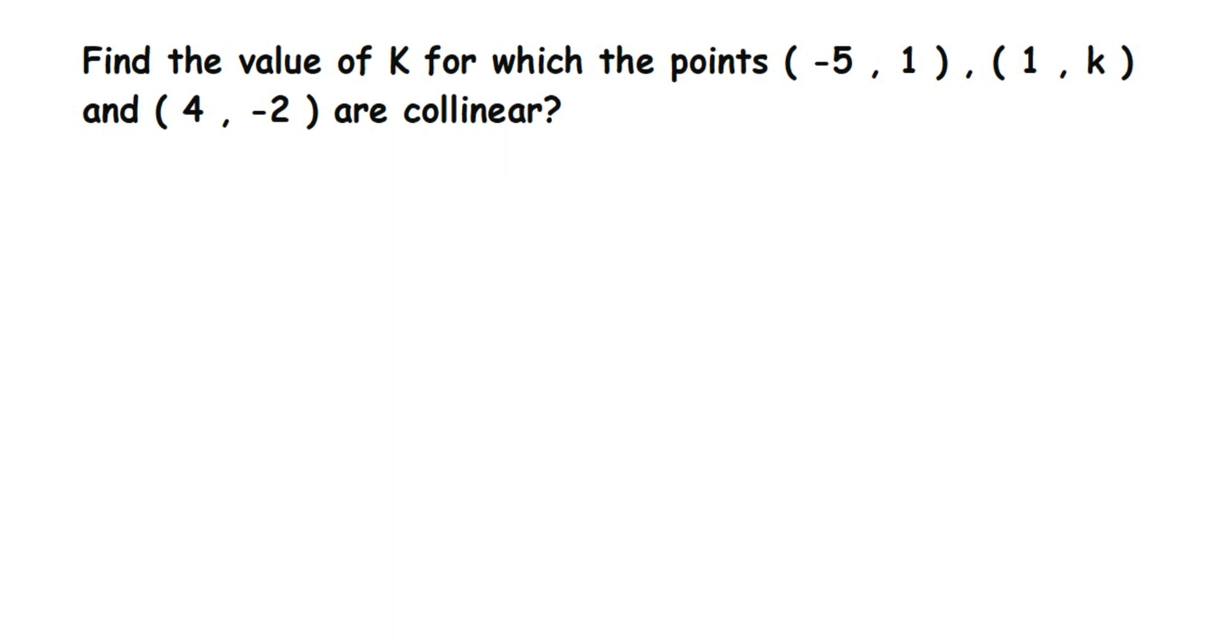So we are going to use the area of triangle formula and equate it to 0 because we cannot find the area when points are on a straight line. We are going to equate the formula to 0 and substitute the values.